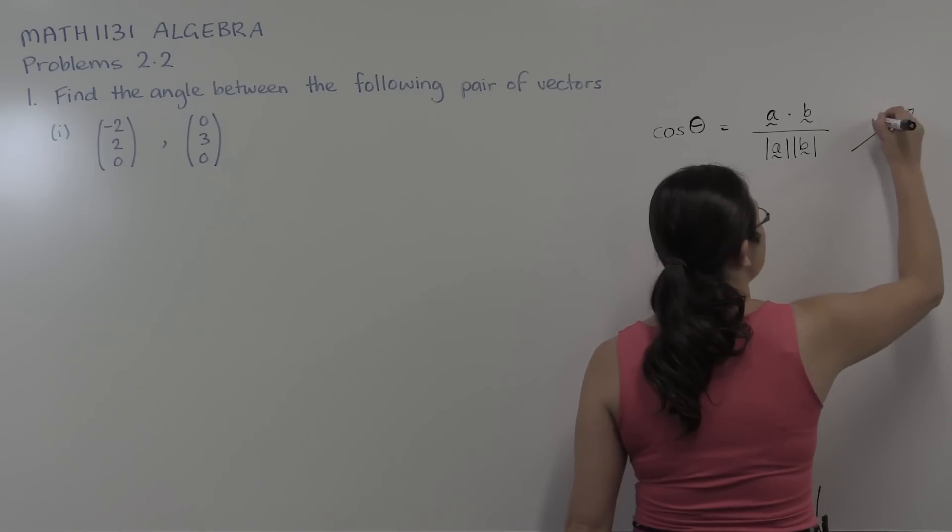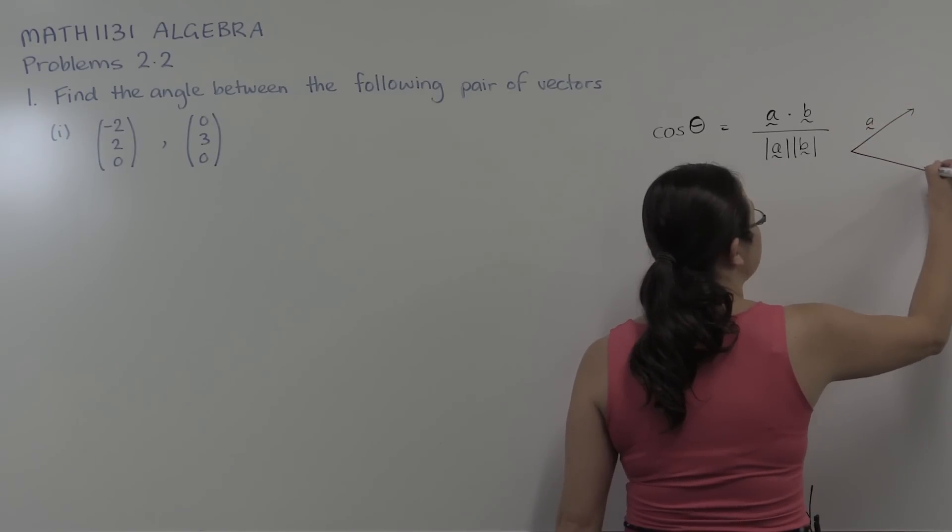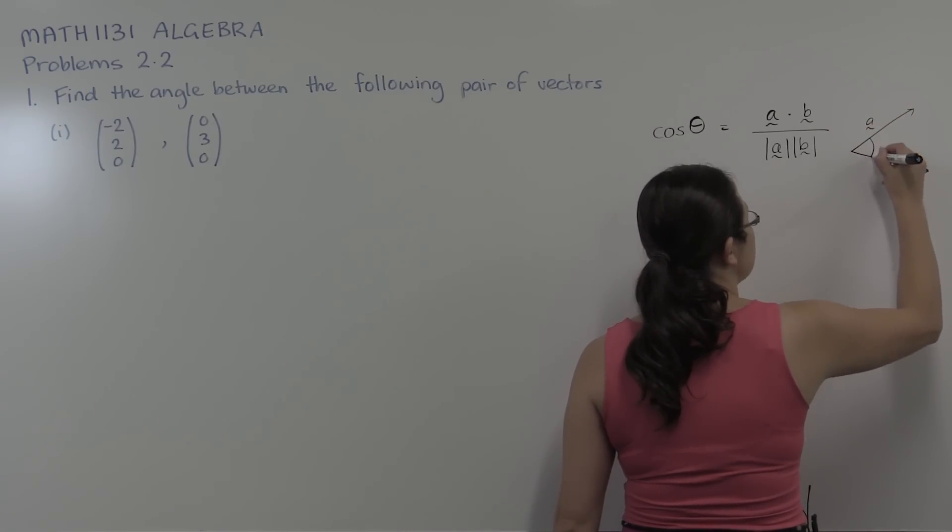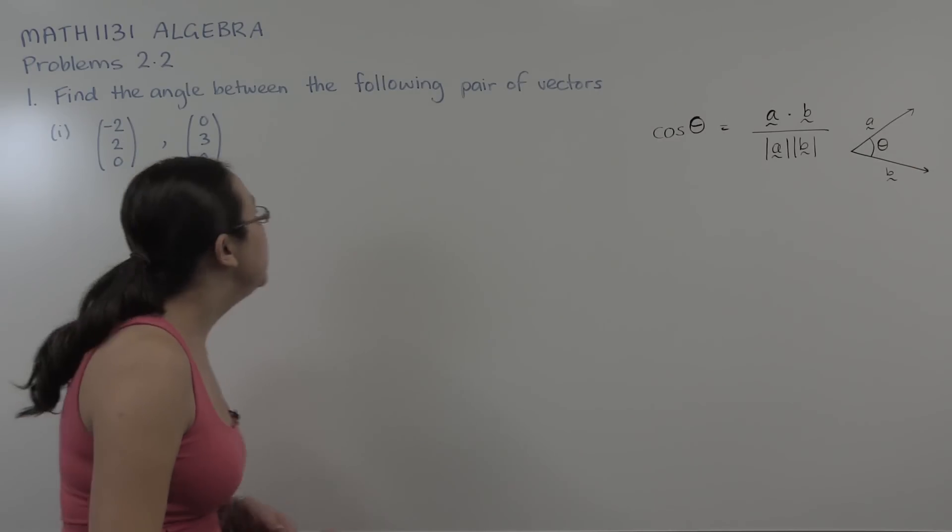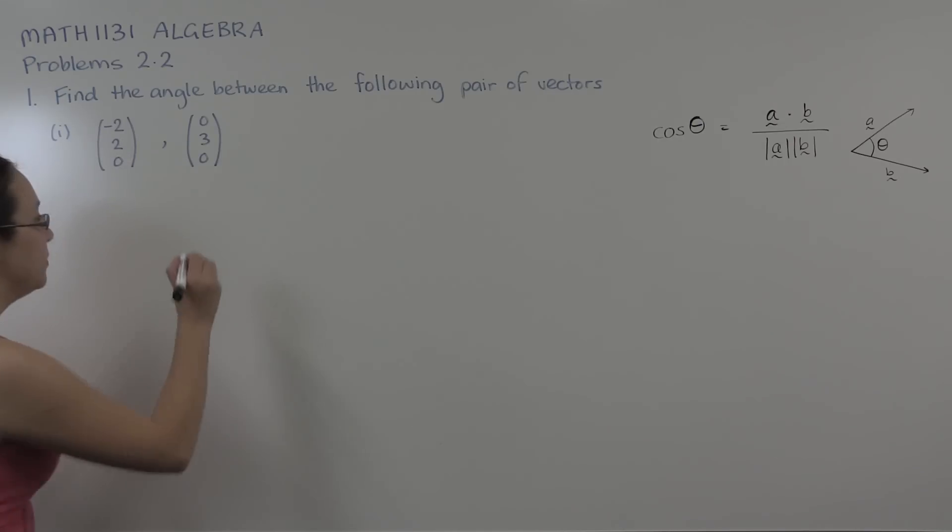So here might be my vectors a and b, and this helps us calculate the angle between those two vectors. So here we have our two vectors a and b.